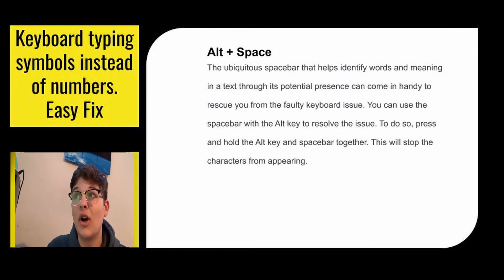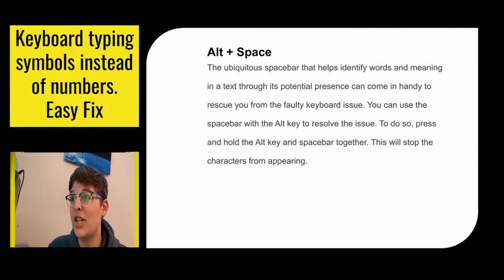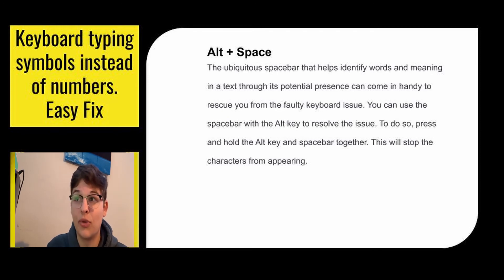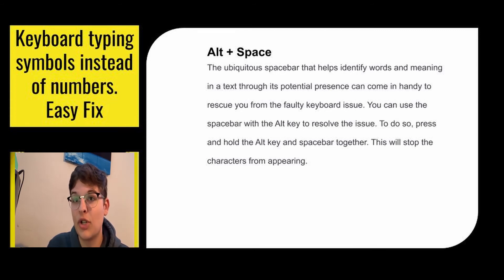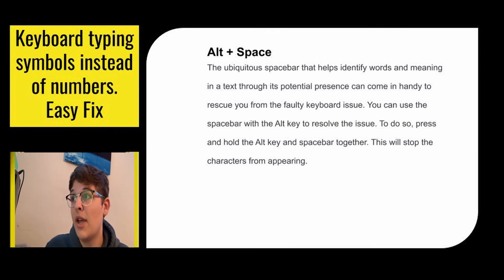Next, you might want to press Alt plus Space. The space bar is a really useful key — you can use it with the Alt key to get your keyboard to start typing numbers again instead of symbols. Just hold Alt and Space at the same time and that should stop the incorrect characters from appearing.